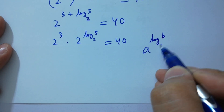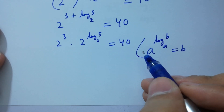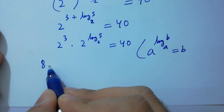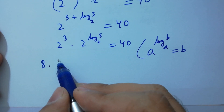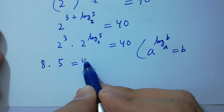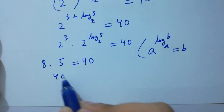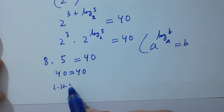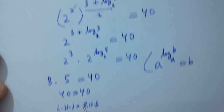Using the identity a to the power log b to the base a equals b, we get 2 to the power 3 times 2 to the power log 5 to the base 2, which equals 8 times 5 equals 40. Left hand side equals right hand side, which shows that the value of x satisfies the equation.